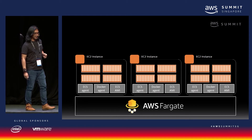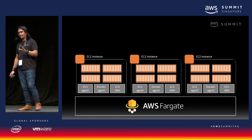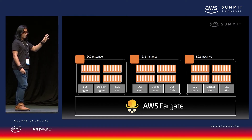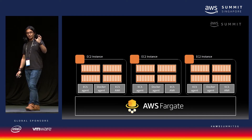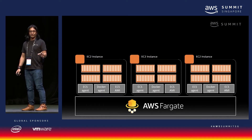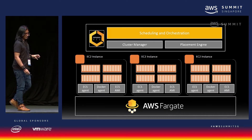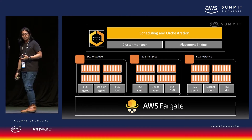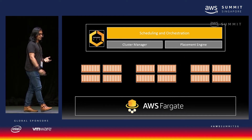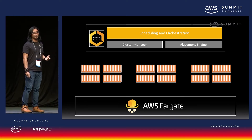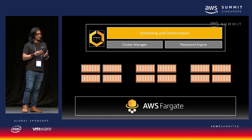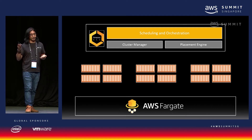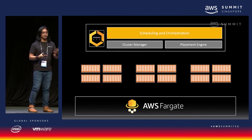As you can see in this diagram, if you want a Docker architecture using Amazon ECS, you need to build EC2 instances and manage each of those clusters and EC2 fleets. Amazon ECS helps you schedule and orchestrate with the cluster manager and placement engine. But with Fargate, you don't need to worry about those EC2 instance fleets. You simply push your container images to the ECR repository, ask Fargate to update the service, and you're done.